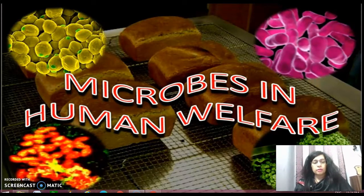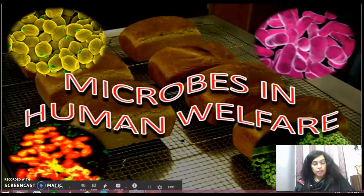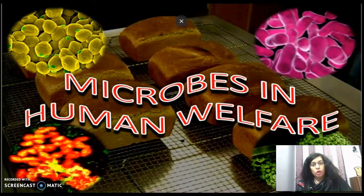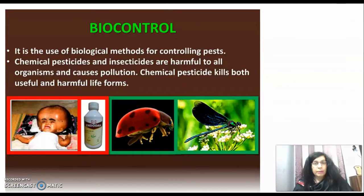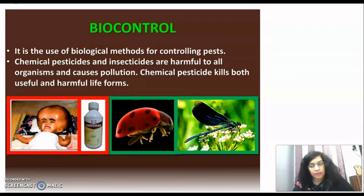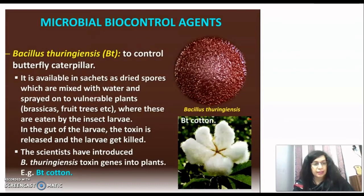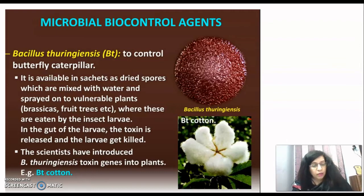Whenever we talk about microbes as biocontrol agents, we have to use biological methods for the control of pests and diseases of plants. What is happening now is that we are using chemical pesticides, insecticides, and weedicides. These chemicals enter the food chain and affect organisms — both useful and harmful life forms are killed. So in biological control and microbial biocontrol, we use biological control as a method to control pests.